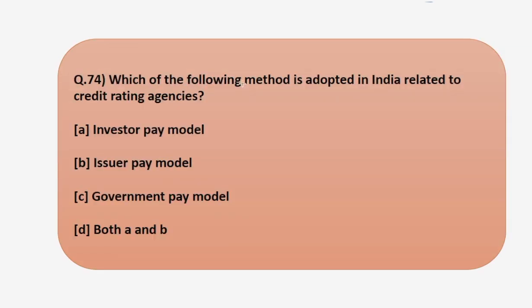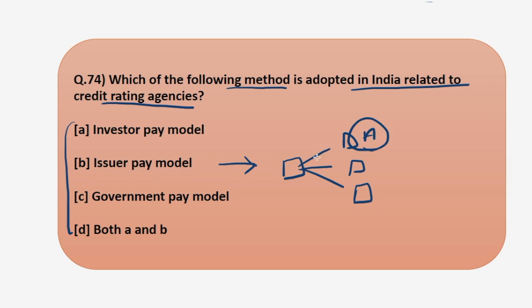Next question: which method is adopted in India related to credit rating agencies? Three models have been given, so we'll have a brief discussion on these models. First, the issuer pay model. If there is a company, the company can do rating shopping. Rating shopping means this company can go to different rating agencies and the company pays the credit rating agencies to rate itself. If it goes to credit rating agency A and doesn't get good rating, it can go to agency B and so on. This is known as issuer pay model because the company itself is paying to get rated.